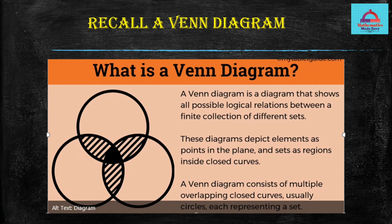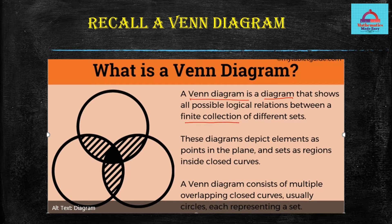The first thing I am showing you about the Venn diagram — I want you to recall this is something quite familiar to all of you. We have used Venn diagrams in our previous sessions where we solved some questions on unions and intersections. So what is a Venn diagram? A Venn diagram is a diagram that shows all possible logical relations between a finite collection of different sets.